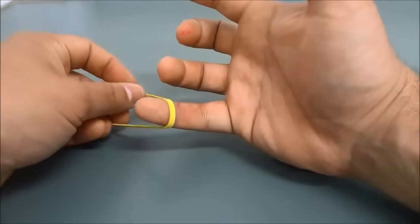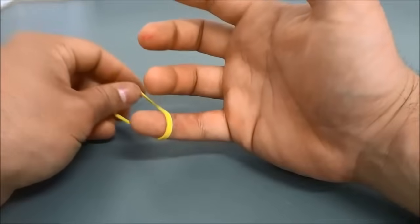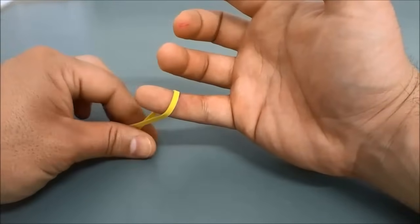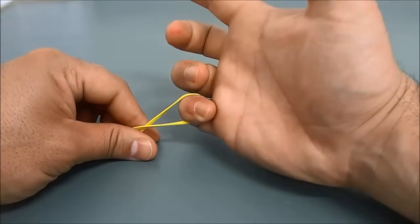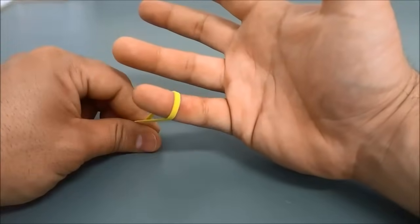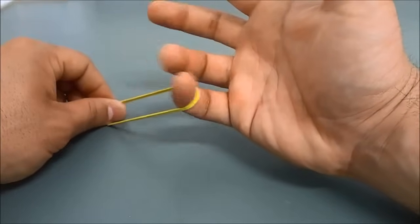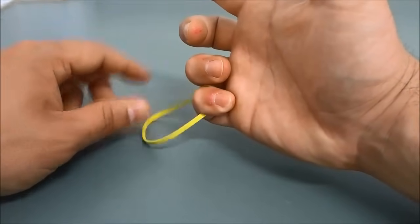You're going to start off by placing the rubber band around your pinky finger right about there and then you are going to close your pinky finger just like that. Wrap the rubber band around your pinky finger and then sort of hook it closed.